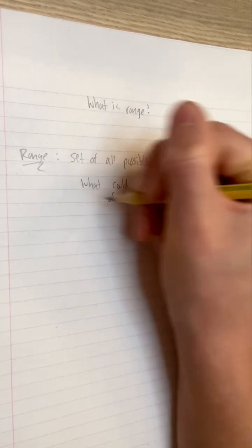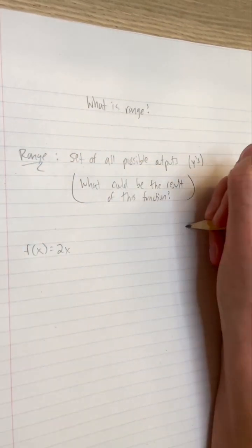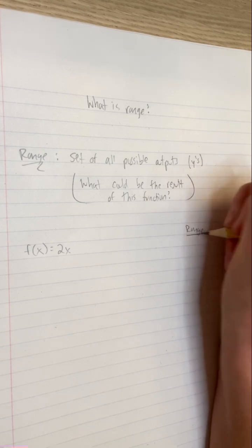Here are a few examples. If f equals 2x, the range of f is all real numbers. We could feasibly get any number as the output of this function.